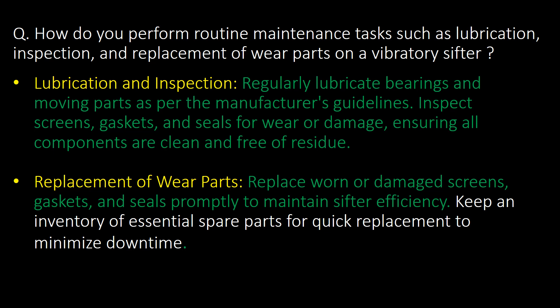How do you perform routine maintenance tasks such as lubrication, inspection, and replacement of wear parts on a vibratory shifter? First, lubrication and inspection — regularly lubricate bearings and moving parts as per manufacturer's guidelines, and inspect screens, gaskets, and seals for wear or damage, ensuring all components are clean and free from residue. Second, replacement of wear parts — replace worn or damaged screens, gaskets, and seals promptly to maintain shifter efficiency.